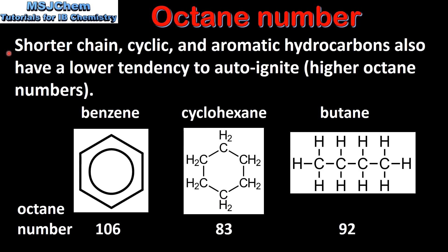Shorter chain, cyclic, and aromatic hydrocarbons also have a lower tendency to auto ignite, which means they have higher octane numbers. Here we have benzene, which is an aromatic hydrocarbon, cyclohexane which is a cyclic hydrocarbon, and butane which is a short chain hydrocarbon. If we look at the octane numbers we can see they all have high values, which means a lower tendency to auto ignite and cause knocking.